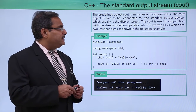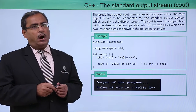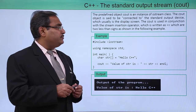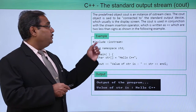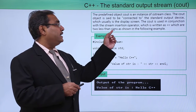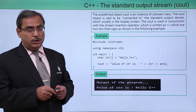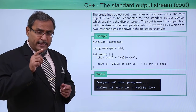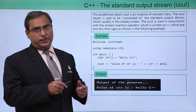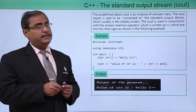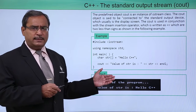Cout is used in conjunction with the stream insertion operator, which is written as the double less-than symbol (<<), as shown in the following example. This double less-than symbol is known as the insertion operator, so please remember that.